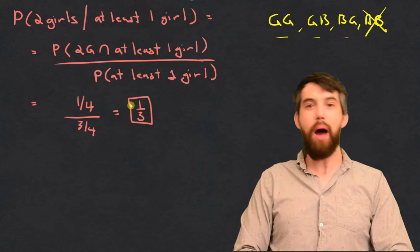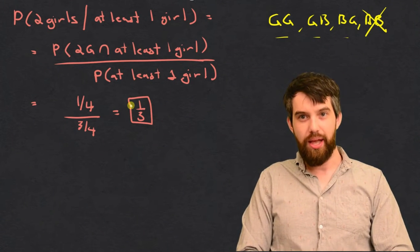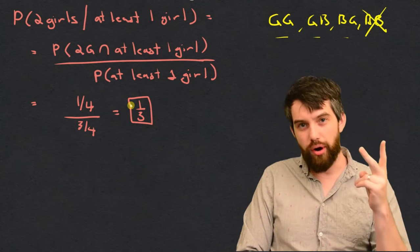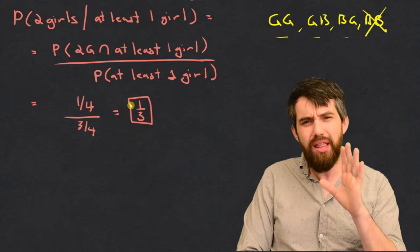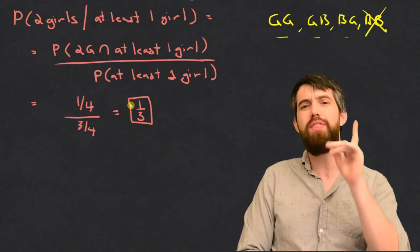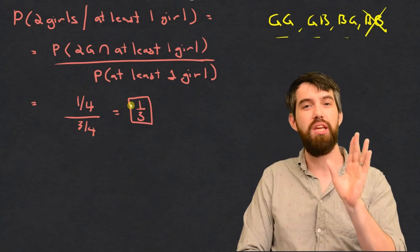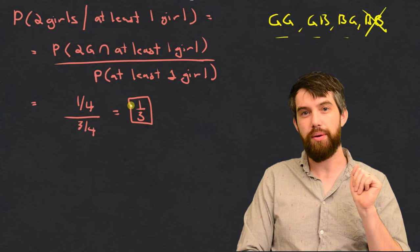So the probability of having two girls, given that you're informed that there is at least one girl, is exactly one third.